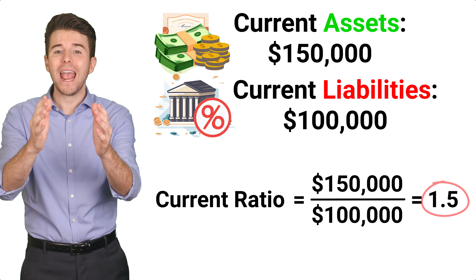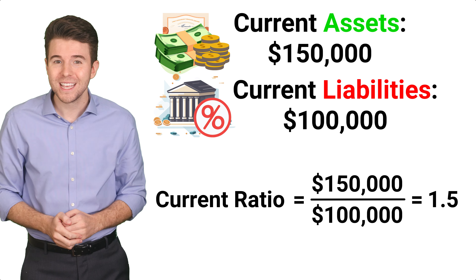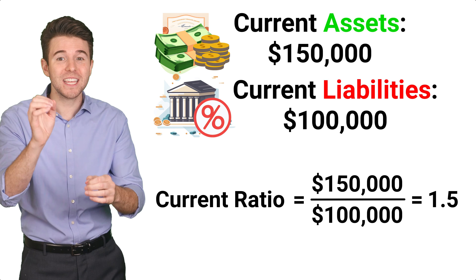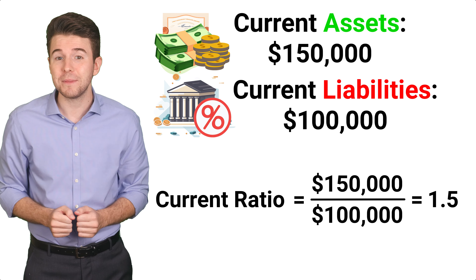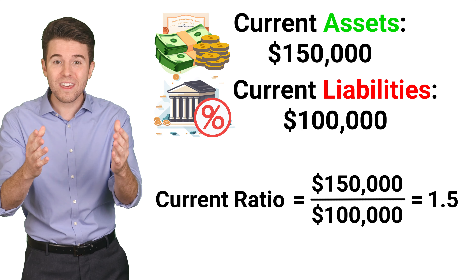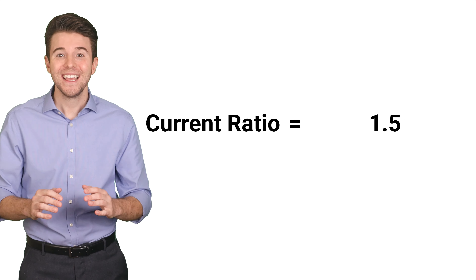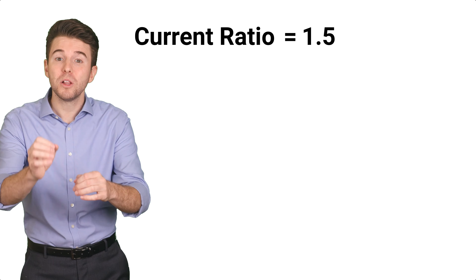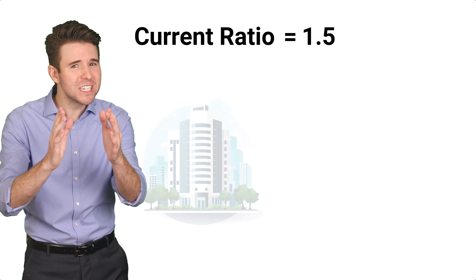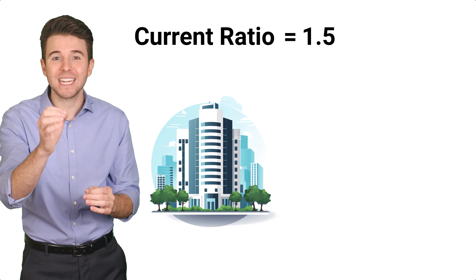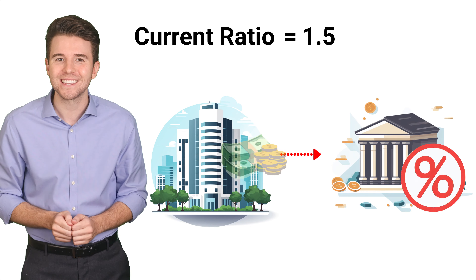Now, a current ratio of more than 1.0 suggests that the company can cover its current obligations with its current assets. In our example, with a ratio of 1.5, it looks like the company is in a good position to cover its immediate debts.